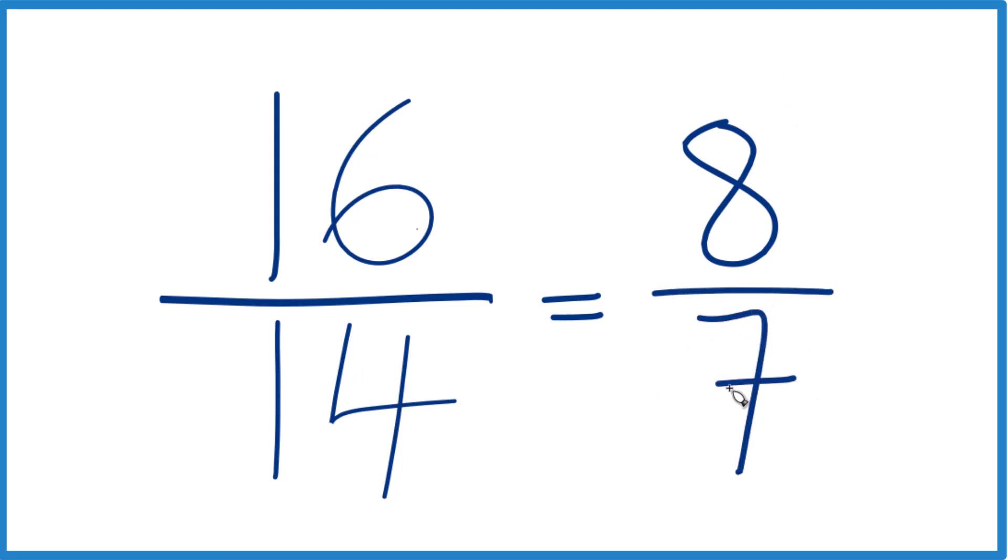We can't simplify this any further, reduce it any further. So 16 fourteenths, when we simplify that, we get 8 sevenths.